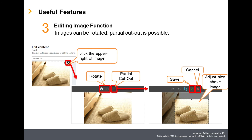With the editing image function, images can be rotated and cropped. In Step 2, Edit Contents, click the icon at the upper right of the image. Images are editable by rotating or cropping. Image Rotation will rotate the image in the direction of the arrow. With cropping, adjust the range you wish to cut out of the image. If you wish to cancel the editing contents, click the red X. If saving the edit, click the green check mark.